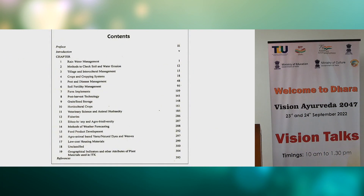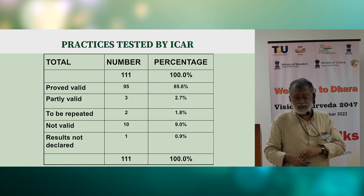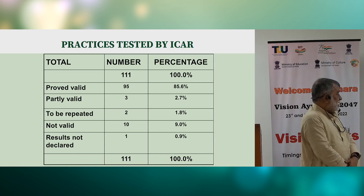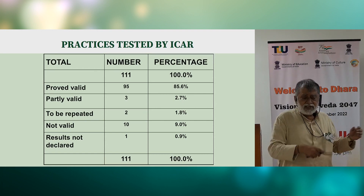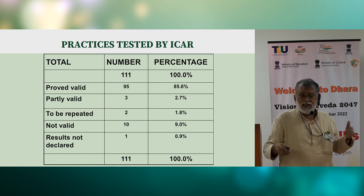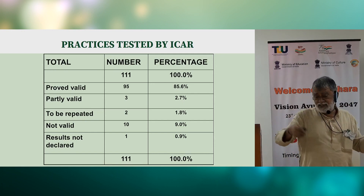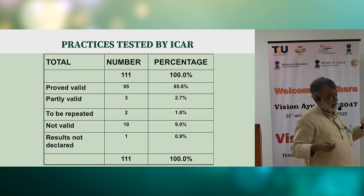These volumes cover topics like tillage and intercultural management, cropping systems, and pest and disease management. Most importantly, a meta-analysis of the validation results shows that as many as 85 percent of practices are proved valid, and 2.7 percent are partly valid. This is a stupendous body of knowledge, and it is remarkable that such a corpus stands up to rigorous testing and validation — rather than being dismissed as a jumble of things said hundreds or thousands of years ago.